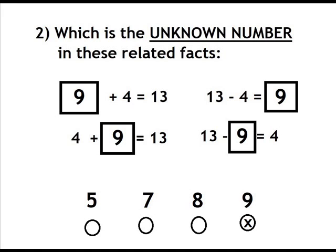Nine. Nine plus four equals thirteen. Four plus nine equals thirteen. Thirteen minus four equals nine. Thirteen minus nine equals four.